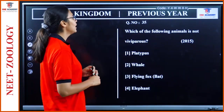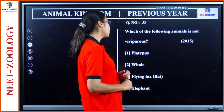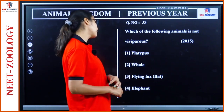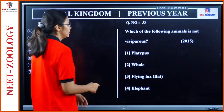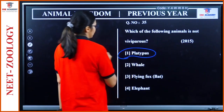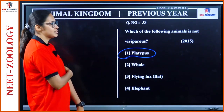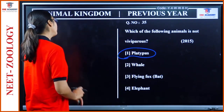Question 35: 'Which of the following animals is not viviparous?' Platypus is not viviparous — they are oviparous. That is the answer.